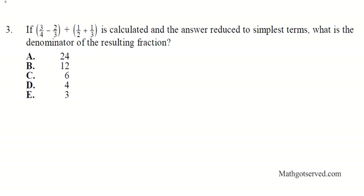Moving along to question 3. It says if 3/4 minus 2/3 plus 1/2 plus 1/3 is calculated and the answer reduces to simplest terms, what is the denominator of the result in fraction? So we have 3 over 4 minus 2 over 3 plus 1 over 2 plus 1/3. We are going to do the operations in the parenthesis first and then we are going to combine the resulting fractions.